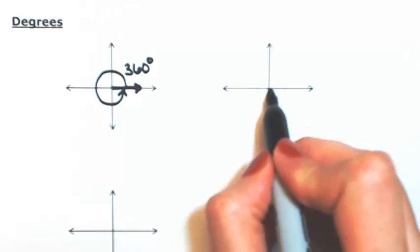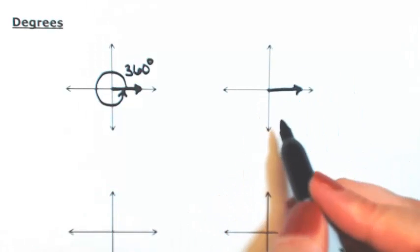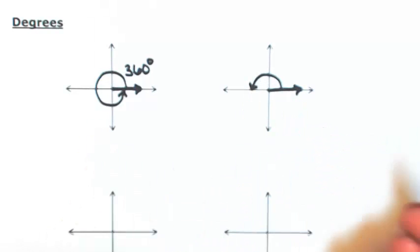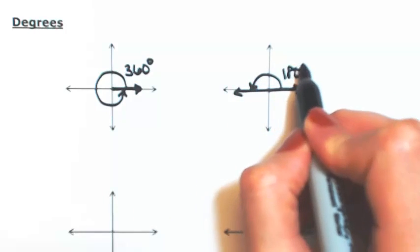So then if I were to start again from the initial side and just go halfway, then half of the 360 would be 180 degrees.